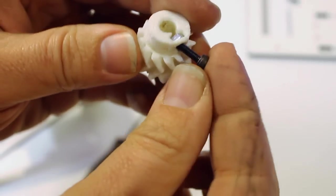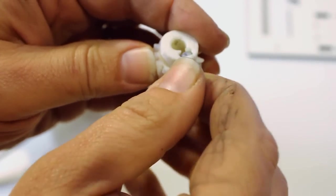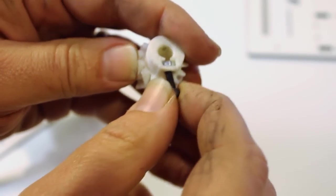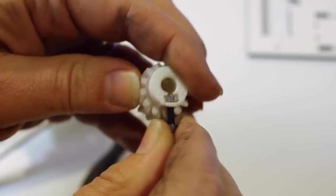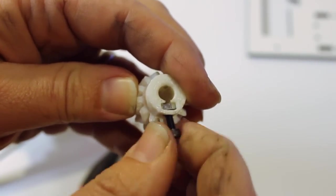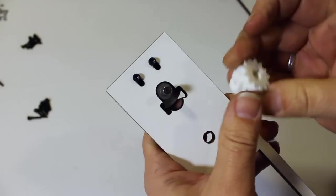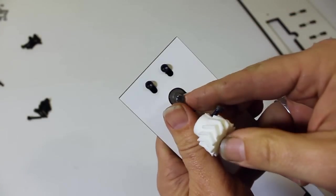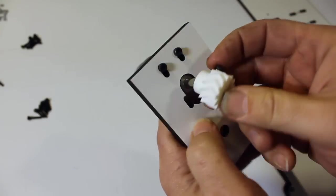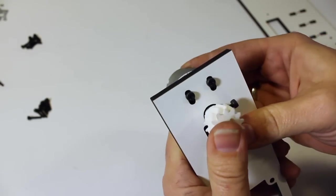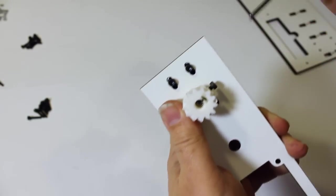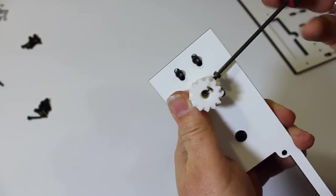Then take the third 10mm M3 screw and put it in just enough to catch it on the threads. Slide the drive gear onto the motor shaft so that the set screw lines up at the flat of the shaft, and then tighten that down the rest of the way.